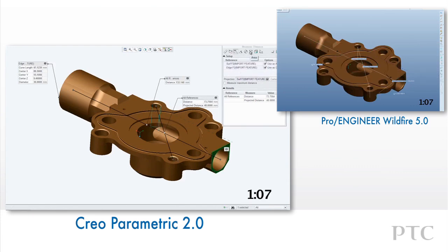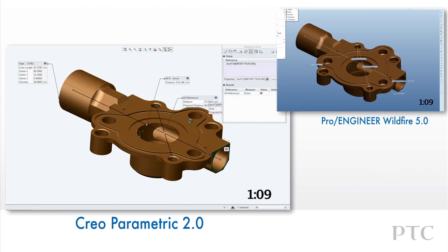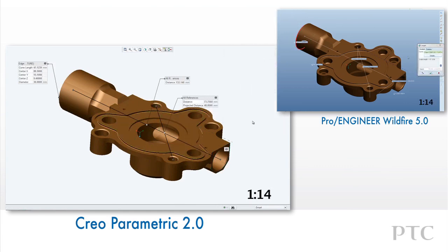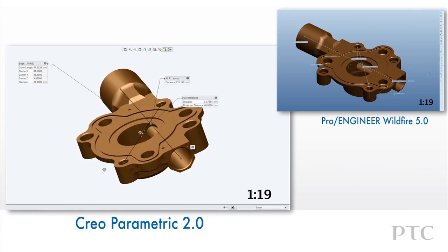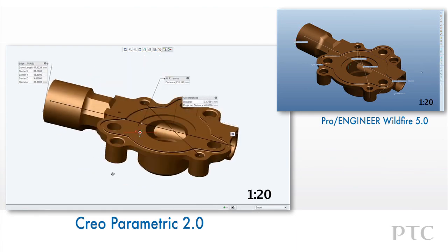When saving the measured values, the dialogs that appear on the screen will be visible after we close the dialog. Unlike Wildfire 5, these can be positioned anywhere on the screen for our viewing convenience. We can also minimize those when we don't need to view them.